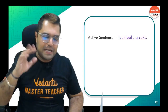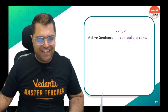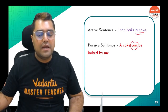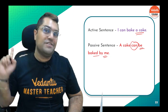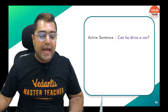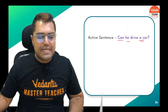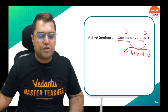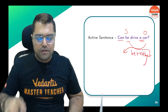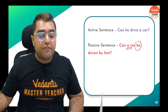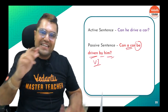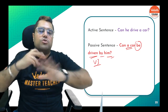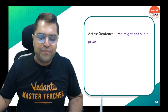Example: 'I can bake a cake.' Passive: 'A cake can be baked by me.' The 'be + V3' construction is very important. Similarly, interrogative: 'Can he drive a car?' Object 'a car' comes first, then 'be + V3 + by.' So: 'Can a car be driven by him?'